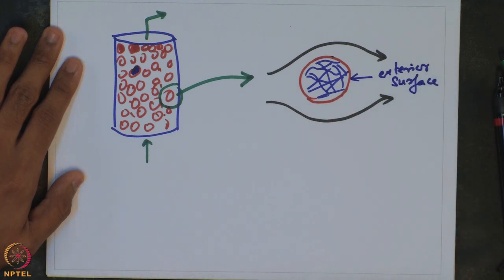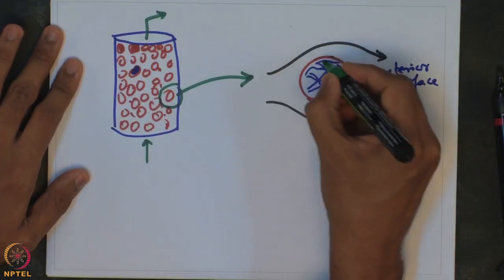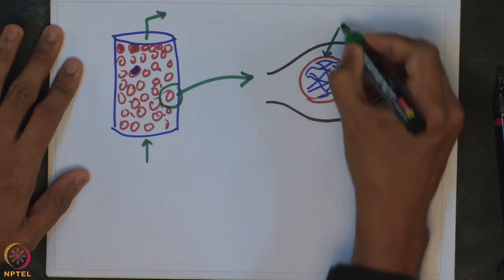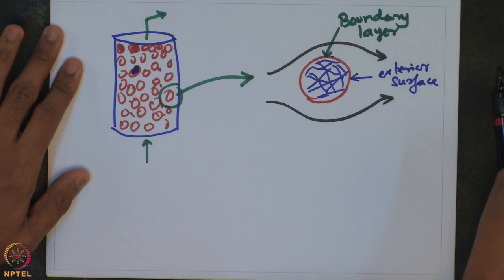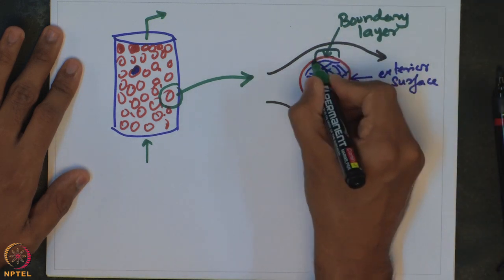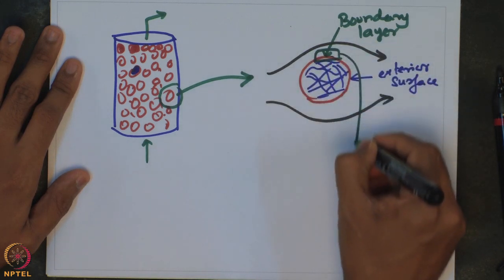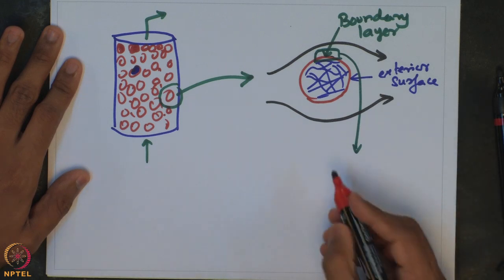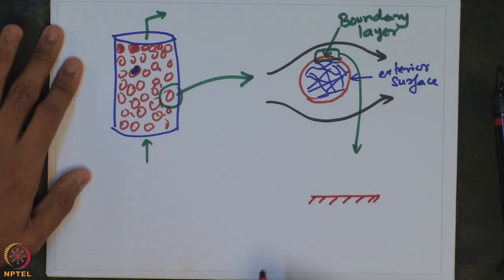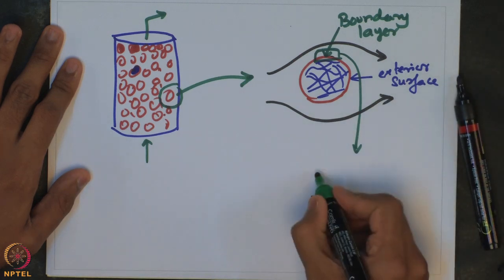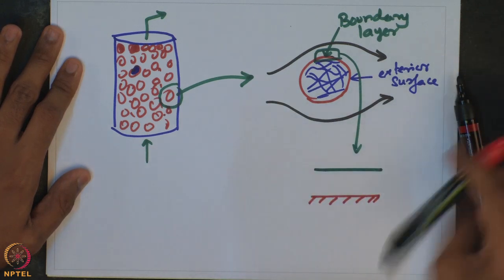When the fluid comes in contact with the exterior surface of the catalyst pellet, what happens is that there is a boundary layer that is actually formed. Let us try to look at what happens very close to the boundary layer. There is a catalyst surface, and then there is a region very close to the surface of the catalyst pellet where all the concentration changes are happening.